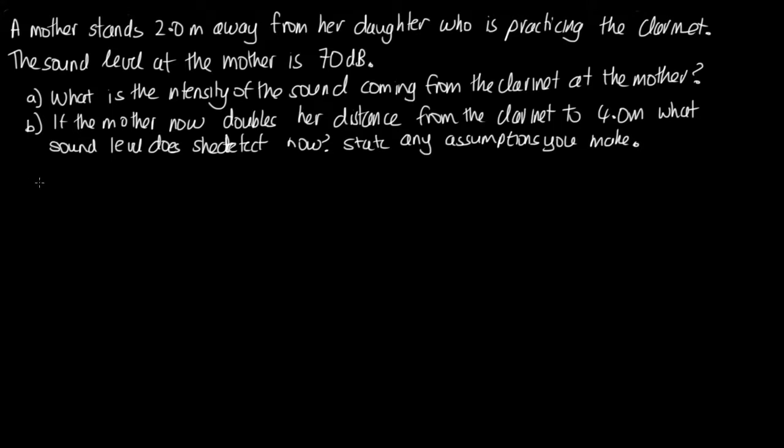For part (a), we're told the sound level is equal to 70 decibels and we know that the distance is equal to 2 meters. We're going to need to make use of our sound level equation that the sound level is equal to 10 log to the base 10 of I, the intensity, over the reference intensity I naught. What we're trying to do is find I. So let's rearrange this equation to make I the subject. This will be a bit tricky if you're not too familiar with logarithms, so we'll take it step by step.